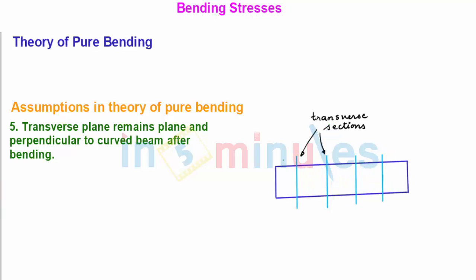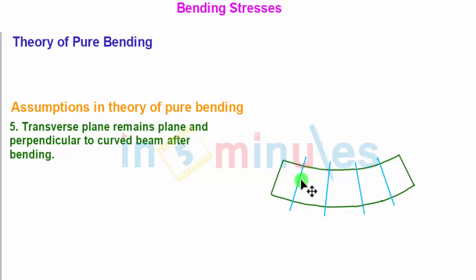On application of the bending moment, this beam curves into a circular arc and all the transverse planes remain plane and perpendicular to the curved section, as is evident from this diagram. All the transverse sections are still perpendicular to this curved section of the beam.